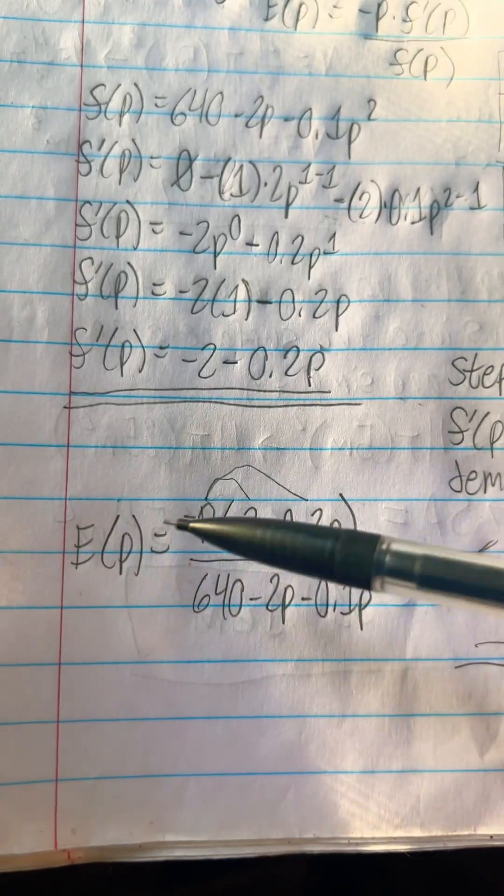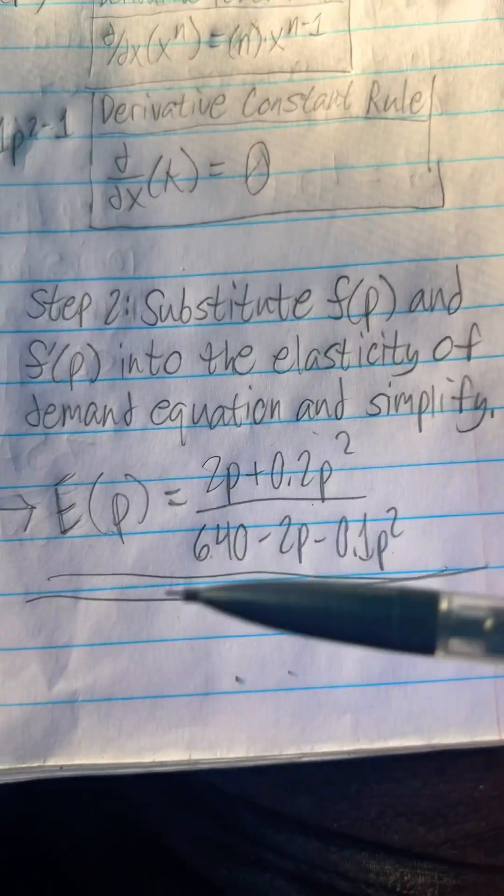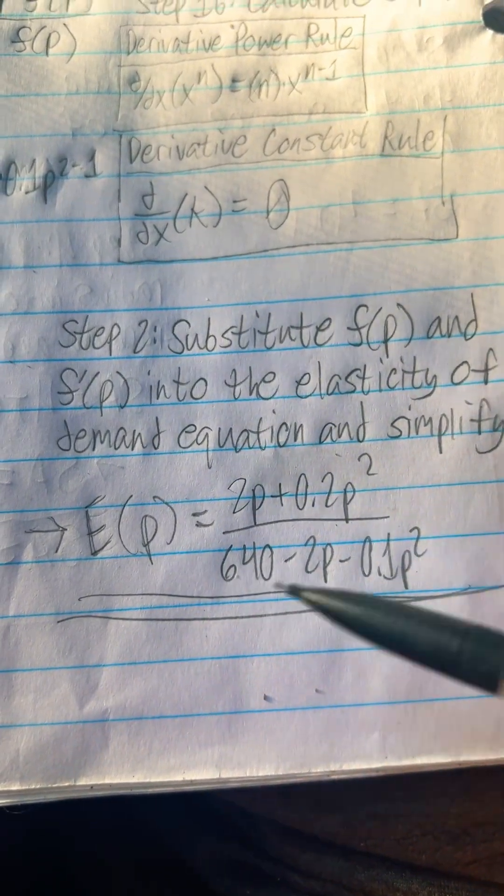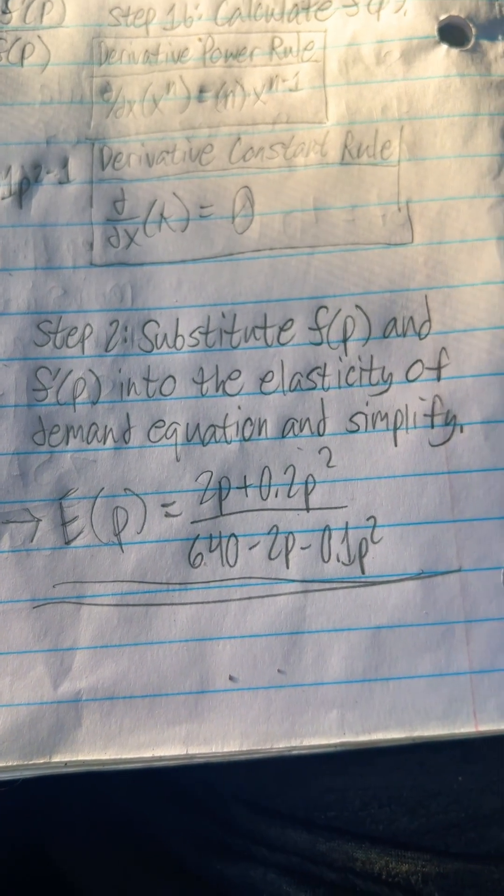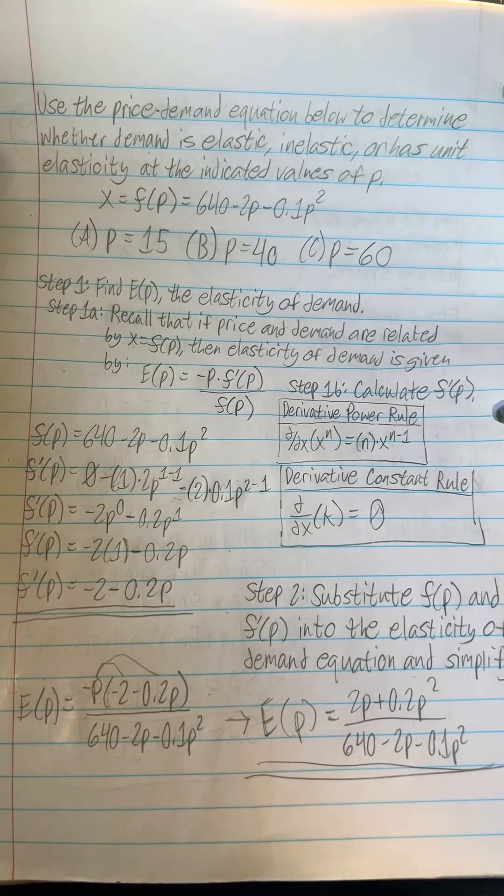And then you just FOIL the top and then you simplify it to E of P equals 2P plus 0.2P squared divided by 640 minus 2P minus 0.1P squared. And that brings us to the last part.